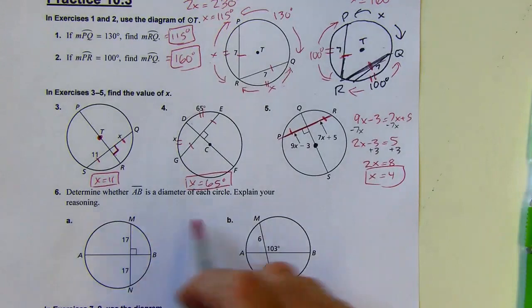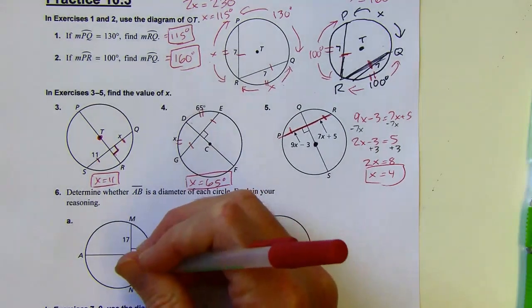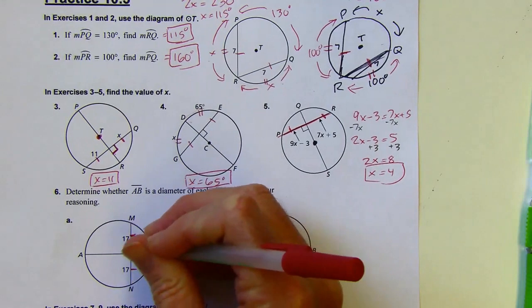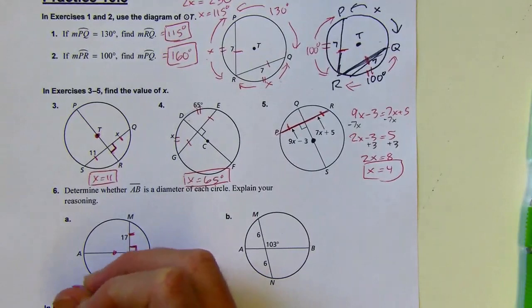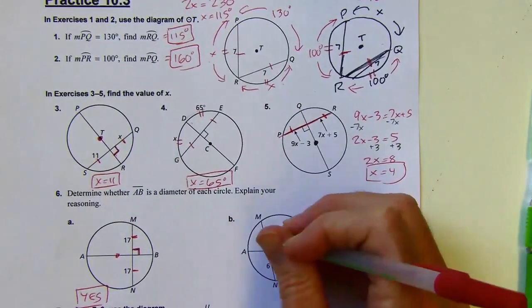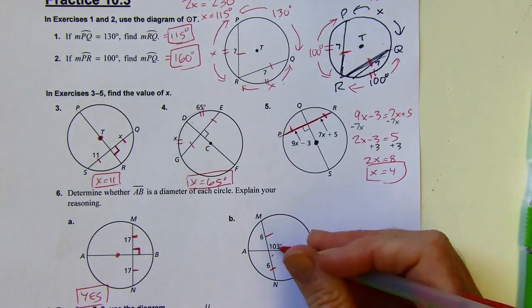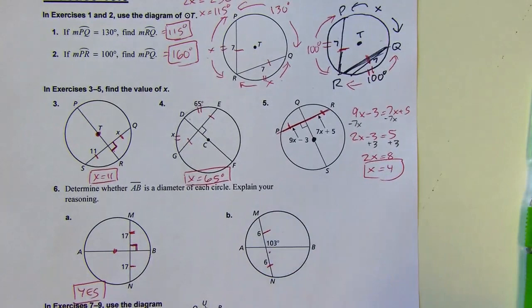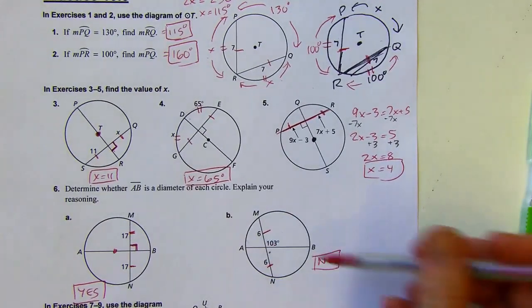Alright, next up, determine whether AB is a diameter or not. So do I know if this is a diameter? Well, it's not marked as a diameter, but let's see if we can figure it out from the given info. Well, we know that it bisects this chord, and it's also perpendicular to that, which means that yes, this is going to be a diameter. Okay, this next one, this AB does bisect this chord, but it's not perpendicular to it. That's not a 90-degree angle right there, because I've got a 103-degree angle. So those aren't perpendicular, so this one is going to be a no. It has to bisect a chord and be perpendicular to it.